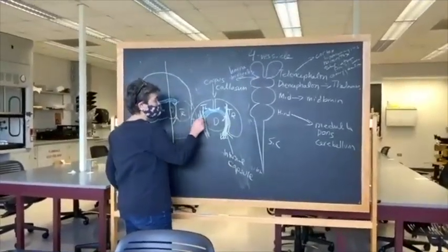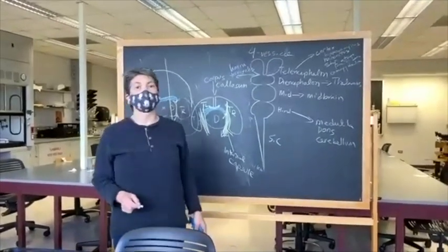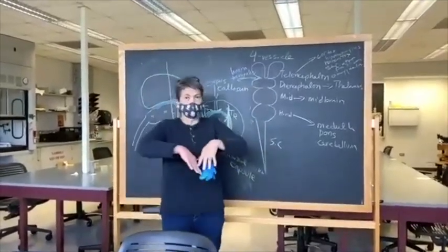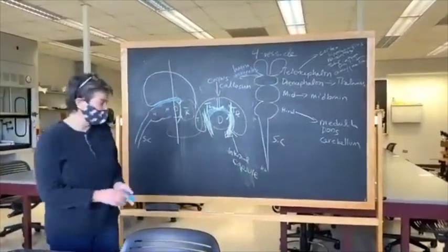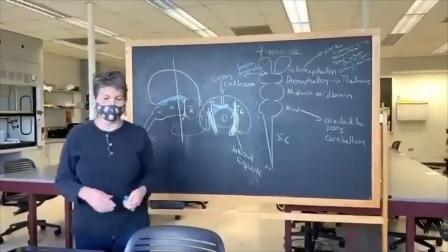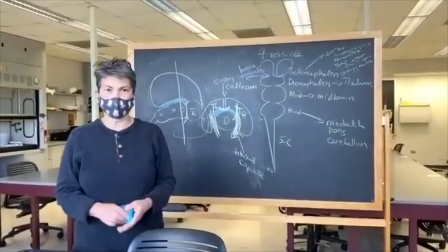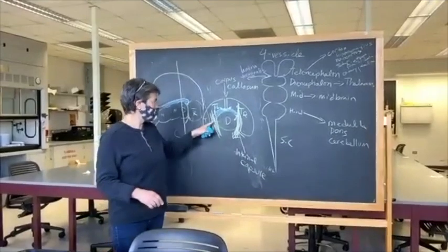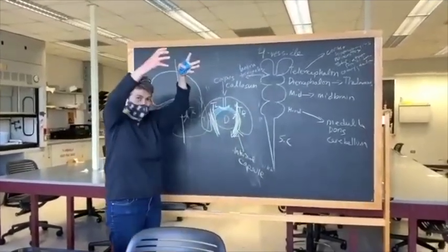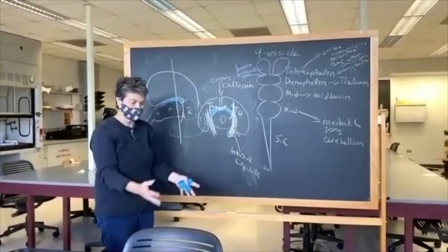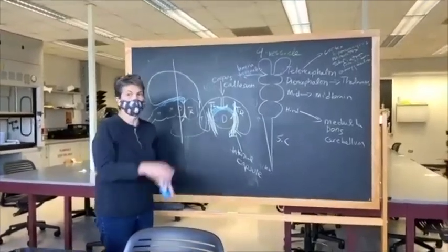You can actually take the entire telencephalon cap off — I have done this in the past. You take it off and what you'll see below is the diencephalon, midbrain, and hindbrain, all lined up.